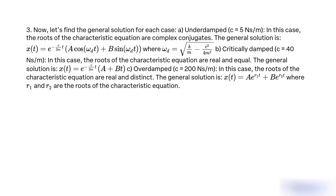Now let's find the general solution for each case. Under-damped: C = 5 Ns/m. In this case, the roots of the characteristic equation are complex conjugates. The general solution is x(t) = e^(−c/2m·t) · (A·cos(ω_d·t) + B·sin(ω_d·t)), where ω_d = √(k/m − (c/2m)²).